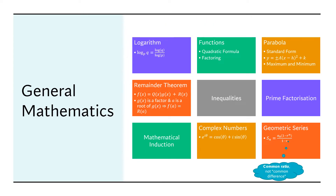Another common problem in the paper is the remainder theorem. What it says is that if you have a polynomial f(x) and you know that g(x) is a factor, and you know that a is a root of g(x), then f(a) equals r(a) — just replace x with a. Because g(a) goes to zero since a is a root, you get f(a) equals r(a). Using this in a problem can be challenging if you're not used to it, so I suggest you do a lot of problems involving the remainder theorem.